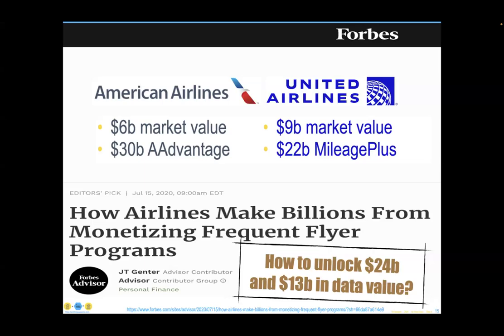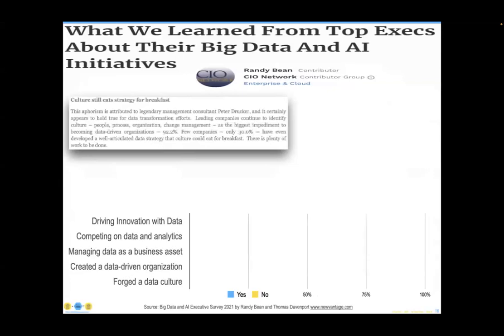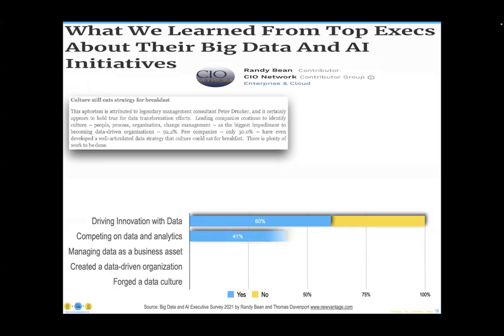The question both CEOs face on an ongoing basis is how do you unlock the rest of that value? It would take at least doubling the market cap of their companies to produce more result. This is not just happening in the airline industry — it's just an example from Forbes Magazine. We see it industry after industry, and having looked at more than 500 different data management practices in organizations, they are all uniformly challenged in many ways.